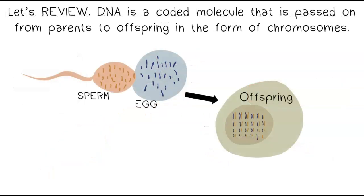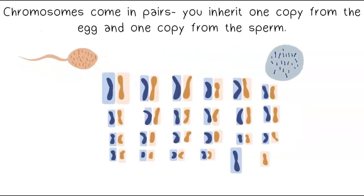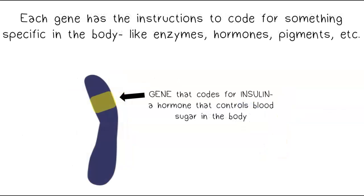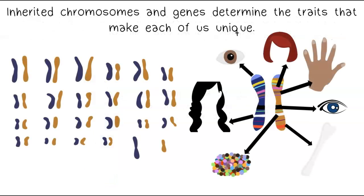DNA is a coded molecule that is passed on from parents to offspring in the form of chromosomes. Chromosomes come in pairs — you inherit one copy from the egg and one copy from the sperm. Each chromosome contains many genes, which are specific segments of the DNA. Each gene has the instructions to code for something specific in the body, like enzymes, hormones, or pigments. Inherited chromosomes and genes determine the traits that make each of us unique.